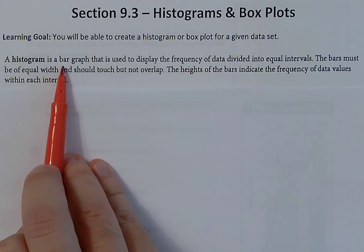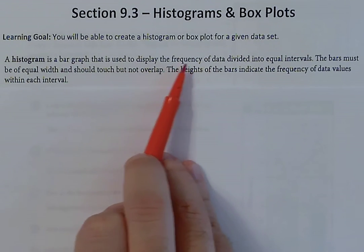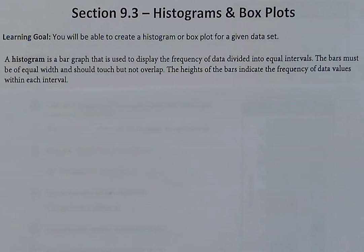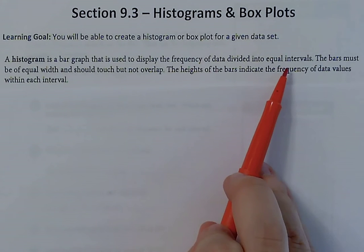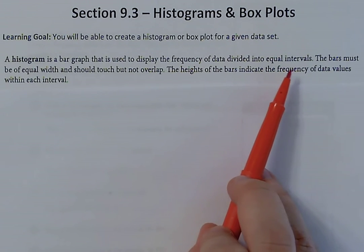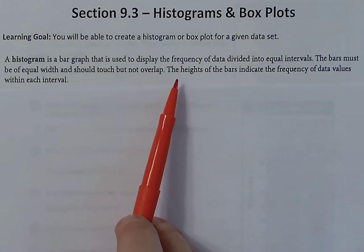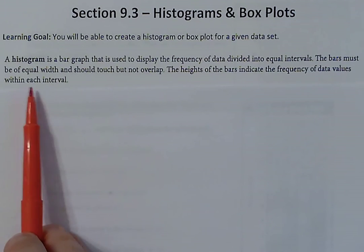A histogram is a bar graph that is used to display the frequency of data divided into equal intervals. Instead of just having a spot for one number, we're going to have an area or a section for an interval — like the set of numbers 60 to 69, 70 to 79, 80 to 89, or 90 to 99. The key is that the intervals have to be equal amounts space-wise. The bars must be equal width and should be touching but not overlapping.